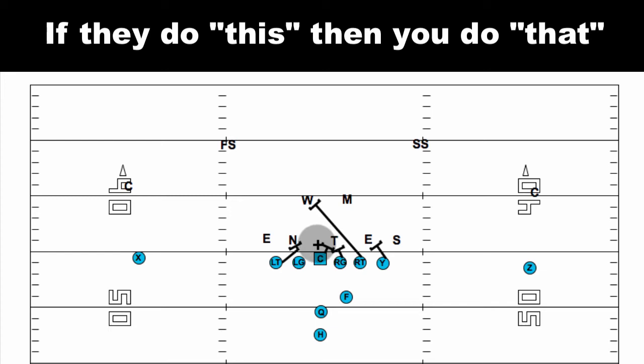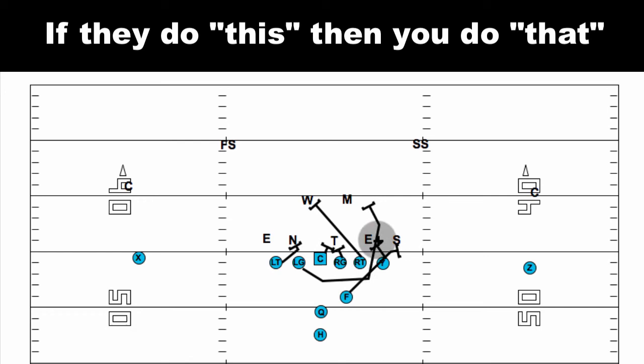Yes, that does leave the end free, but he should not be able to get there in time to make a play. Wrap the guard around up to the play-side Mike, fullback kicks the end out. So you can run this to either side. Even though the defense changed what you're doing, it's still: if they do this, you can still run the same play — or you can now run another play to the other side. The if-then may or may not make you change things.